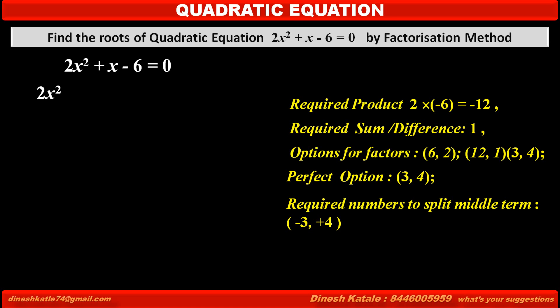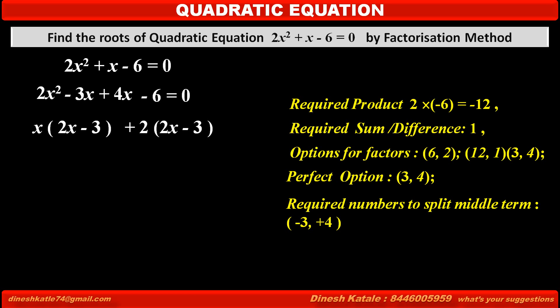Therefore, in the second step, we write the first term 2x² as it is, split the middle term +x as -3x + 4x, and keep the last term -6 as it is, equal to 0. Now, by taking x common from the first two terms, we get x(2x - 3), and by taking +2 common from the last two terms, we get +2(2x - 3), which is equal to 0.